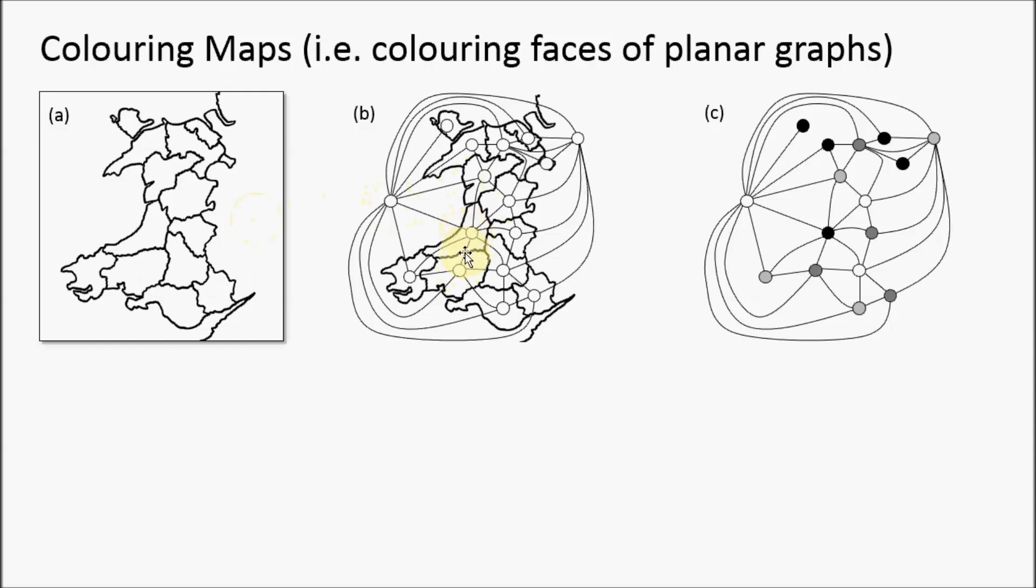Then we draw edges between any neighboring regions. For example, this region here neighbors the sea on the left and all of these around here. As a result, this vertex is adjacent to all of those.